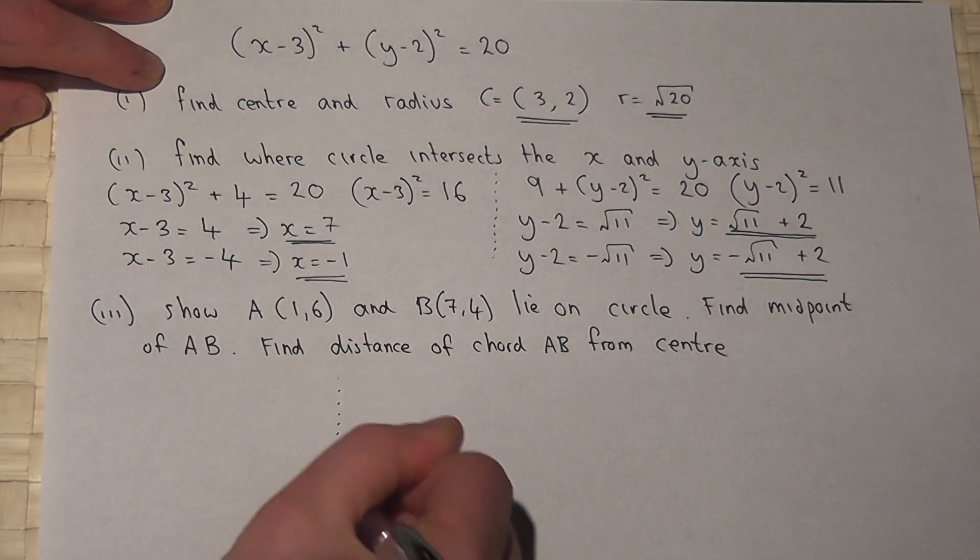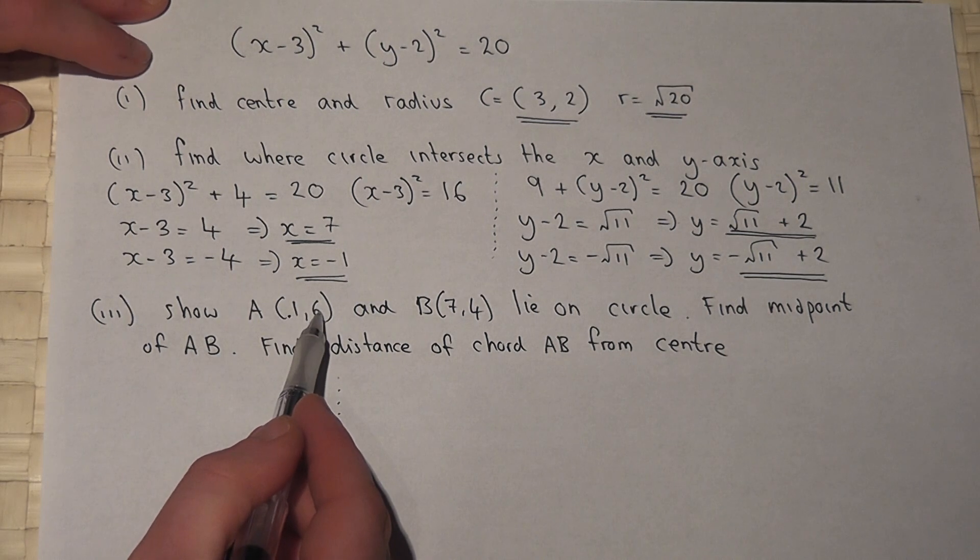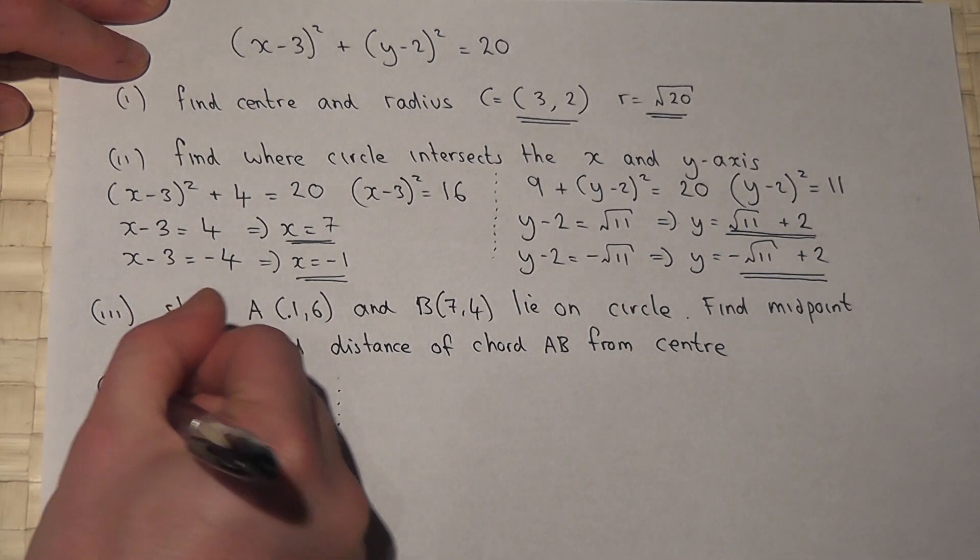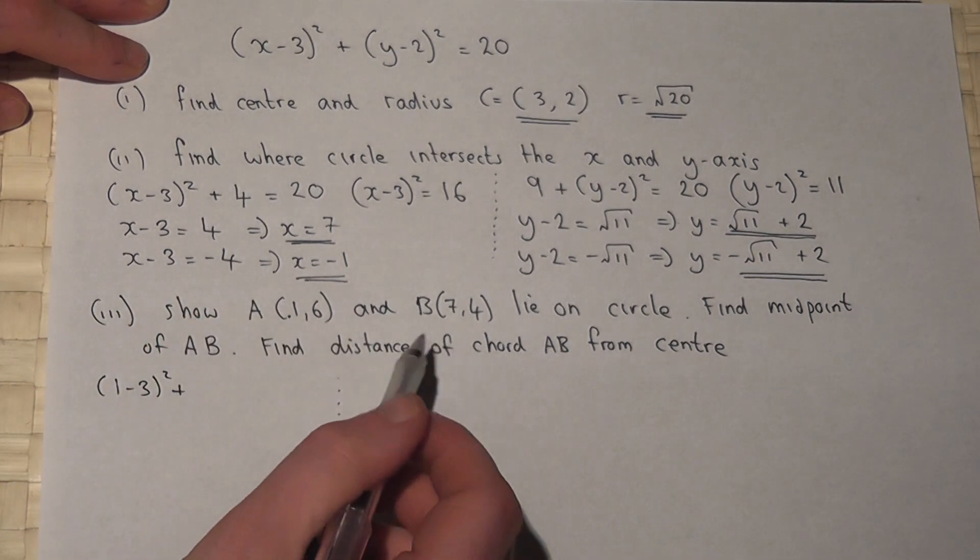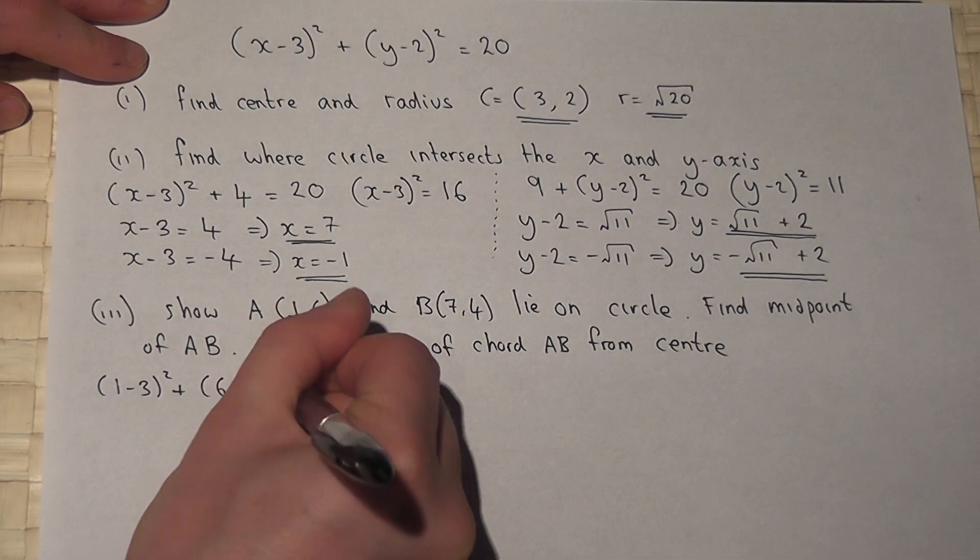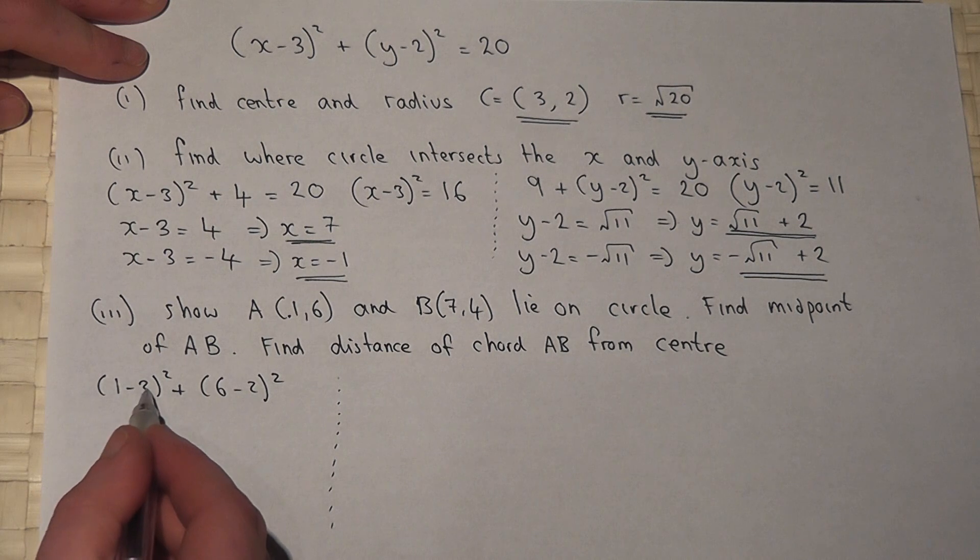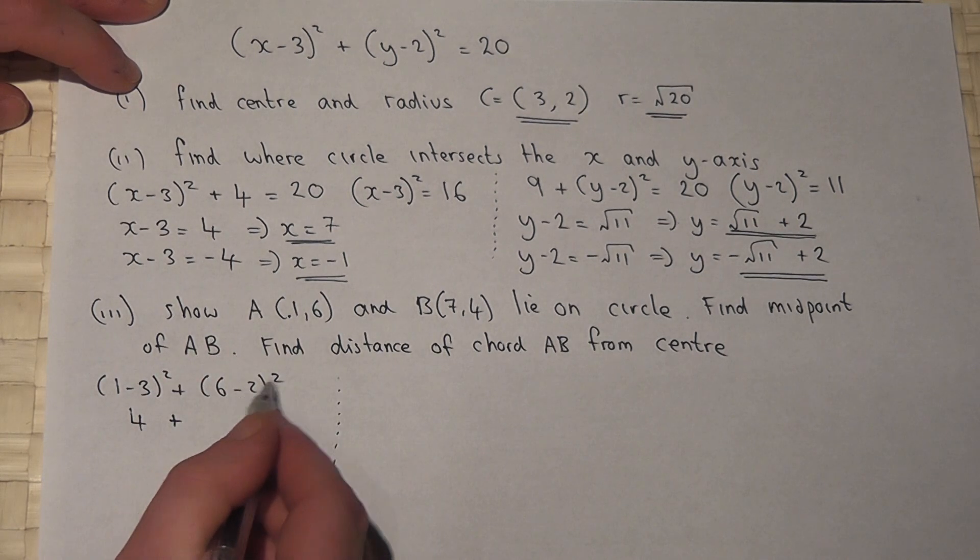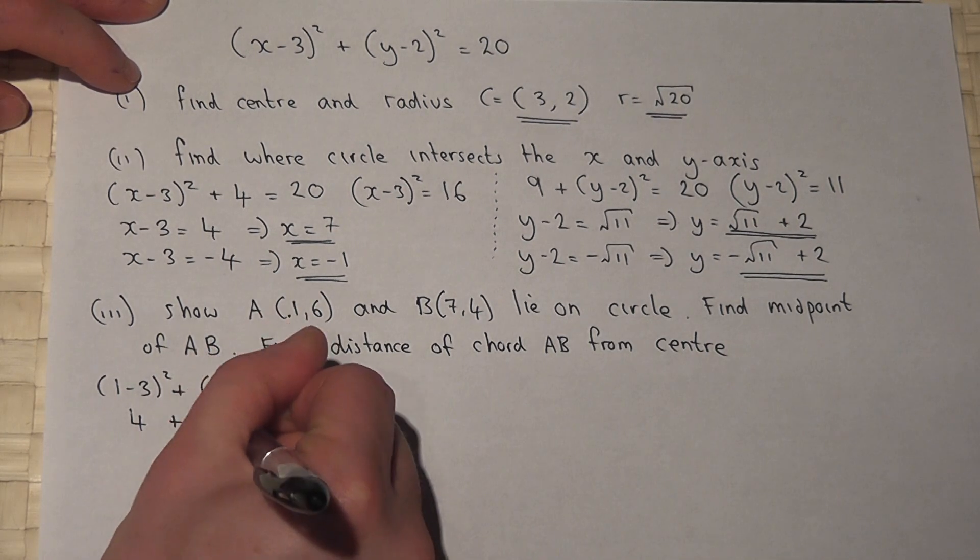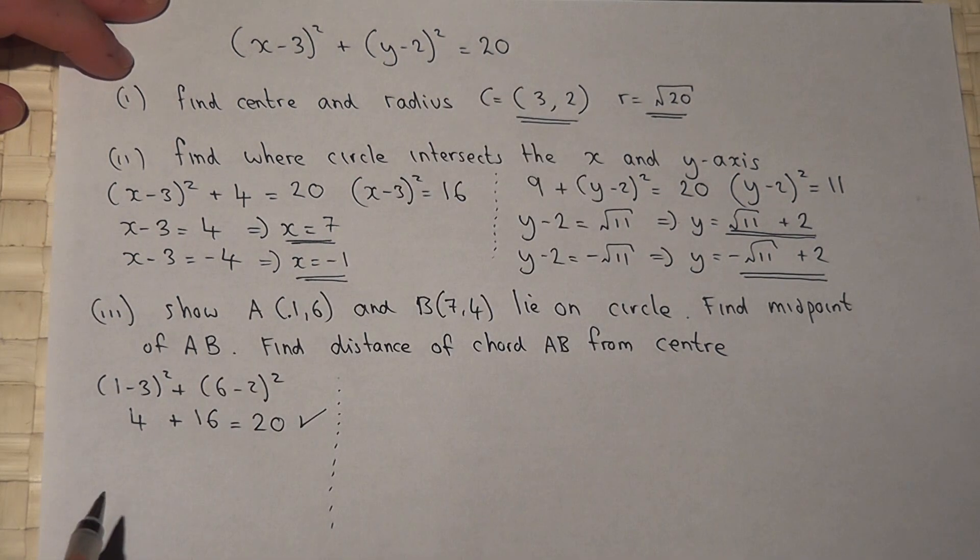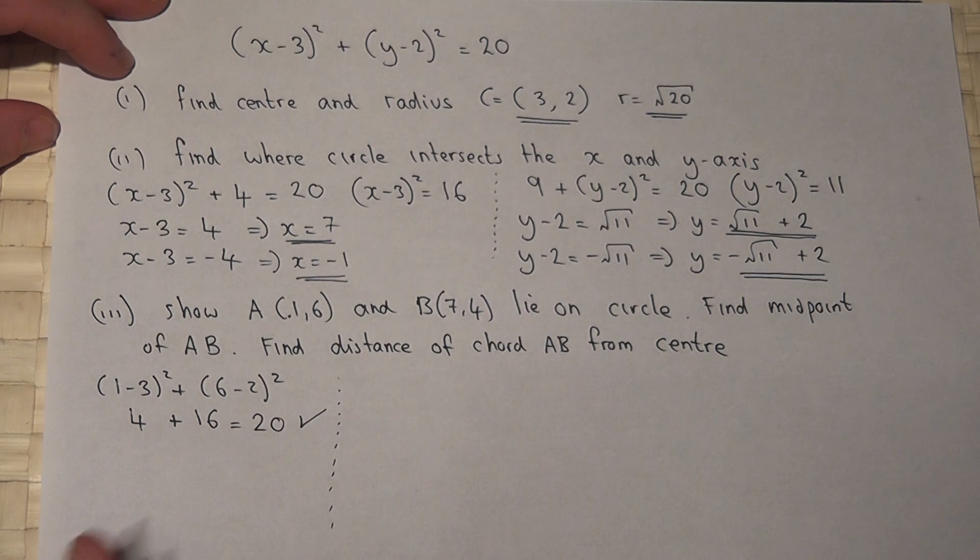So x is 1, y is 6. So (1-3)² + (6-2)². 1-3 is -2, -2 squared is 4. So 4 plus 6-2 is 4, 4 squared is 16. This equals 20, as required. So point A lies on the circle.